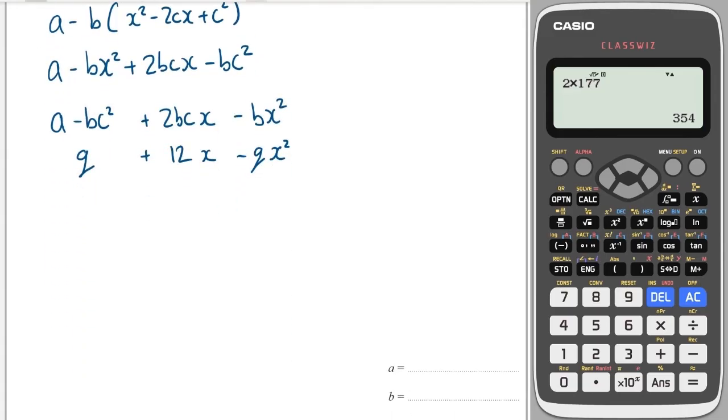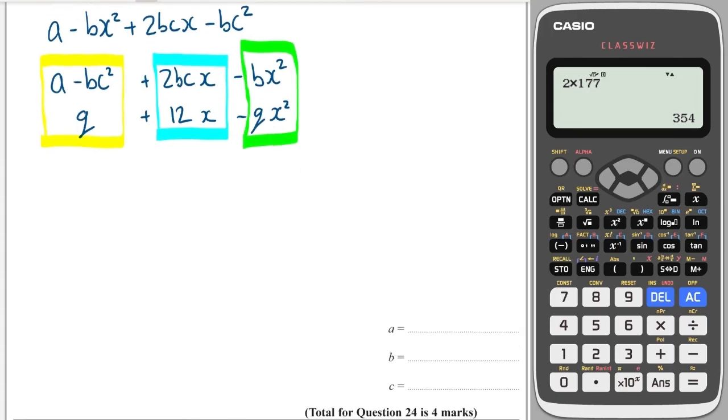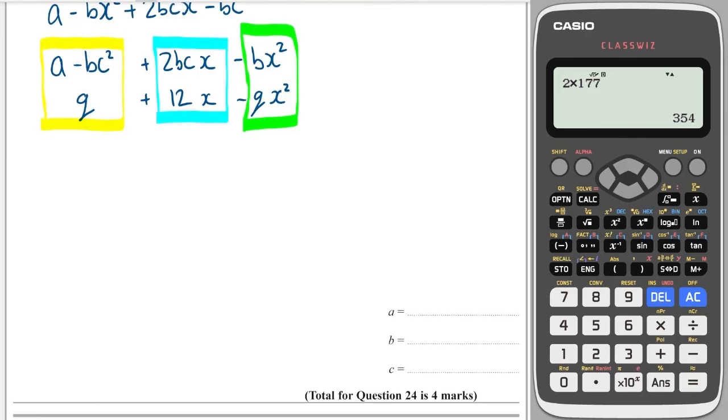And let's compare that then to Q plus 12x minus Qx squared. So now we have the constants, we have the x's, and we have the x squareds. And these should all line up perfectly. So straight away I can see that B must equal Q from the green box, so B must equal Q. And then from the blue box that tells me that 2BC must equal 12. I know that B is Q already, so 2QC must equal 12. So C must equal 12 divided by 2Q, which is the same as 6 divided by Q. So C is 6 over Q.